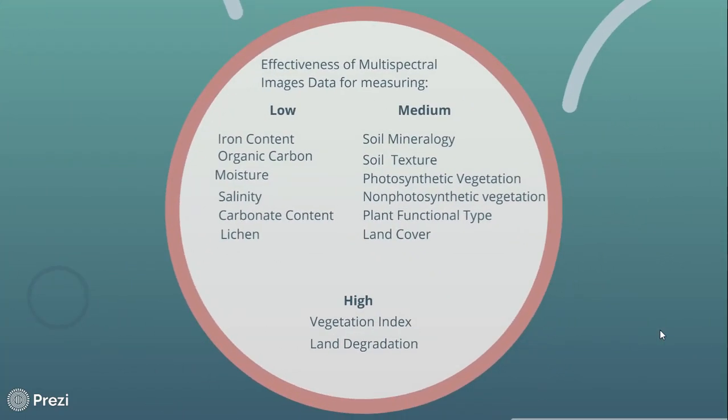The multispectral image data isn't really all that effective for measuring soil properties. It is highly effective with NDVI vegetation indexes and also looking at land degradation and land cover, especially if you have a good training algorithm set. It is okay in measuring mineralogy, texture, photosynthetic and non-photosynthetic vegetation, and the plant functional type, like hardwood or softwood.